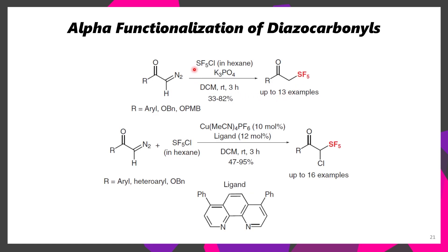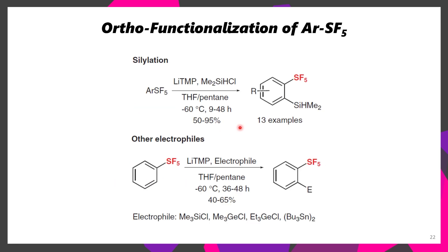You can also take SF5Cl in hexane and treat alpha-diazo carbonyl compounds with it to install an alpha-SF5 group. If you'd instead like to also retain the chlorine, you can just change the conditions a little bit, and in the presence of copper, you'll instead retain the chlorine. If you instead want to take an existing SF5-arene and functionalize it, you can lithiate the ortho position using lithium-TMP and add in your electrophile of choice. This then allows for subsequent functionalization.